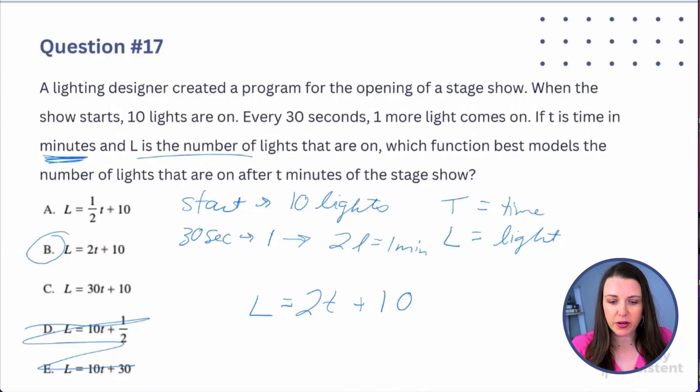We could even play with this a little further. Let's say we're five minutes into the show. How many lights would be on? Let me change my color here. And let's say that T equals five. I would say L equals two times five plus 10. And then that would give me 10 plus 10. And I would know that five minutes into the show, there would be 20 lights. But we really don't even need this because that's just a little bit extra, but that's checking our work. Does the answer that we provided, this equation, does it make sense? Yes, because we figured it out. We used an example that showed, okay yes, this does make sense.